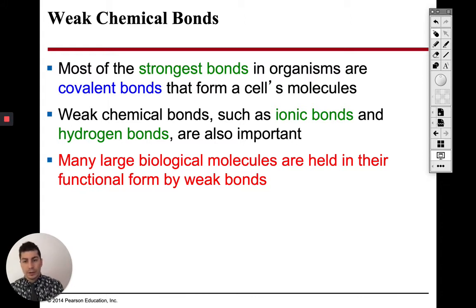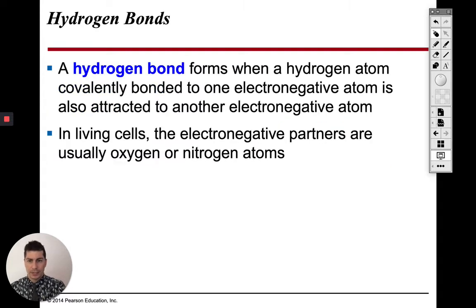So covalent bonds, very strong. Triple covalent bonds are almost unbreakable. Ionic bonds, also very strong. And now we're going to talk about these interactions called hydrogen bonds, which aren't going to be as strong as the other two.